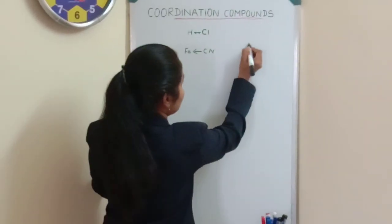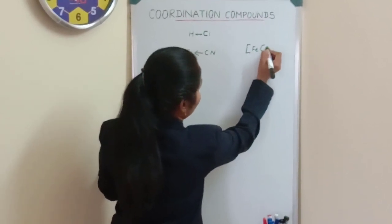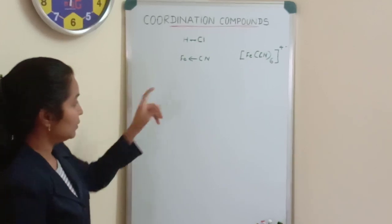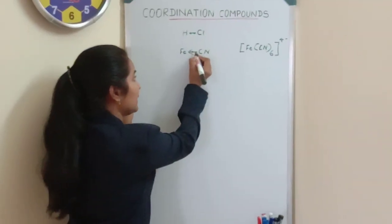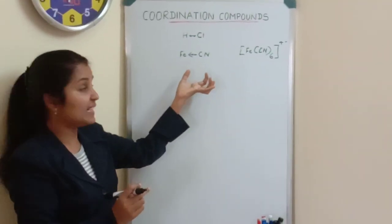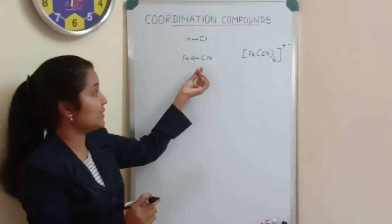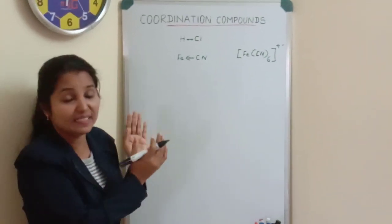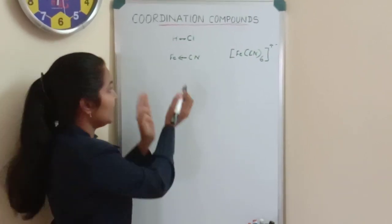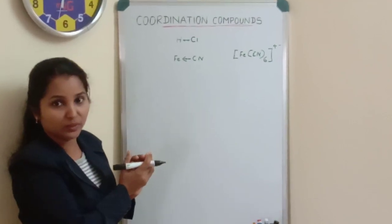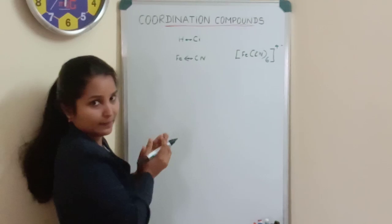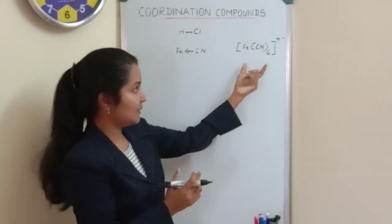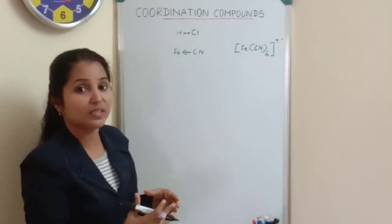In the case of a coordinate bond, taking the example of K₄[Fe(CN)₆], both electrons needed for bond formation are donated by the cyanide group only. The electrons are not equally shared from both parties — one group donates the electron for bond formation. Here, the cyanide group is donating electrons for the formation of the coordinate bond between iron and cyanide. This type of bond is known as a coordinate bond, and when these bonds are present in a complex, the complex is very strong and will not undergo dissociation in water.